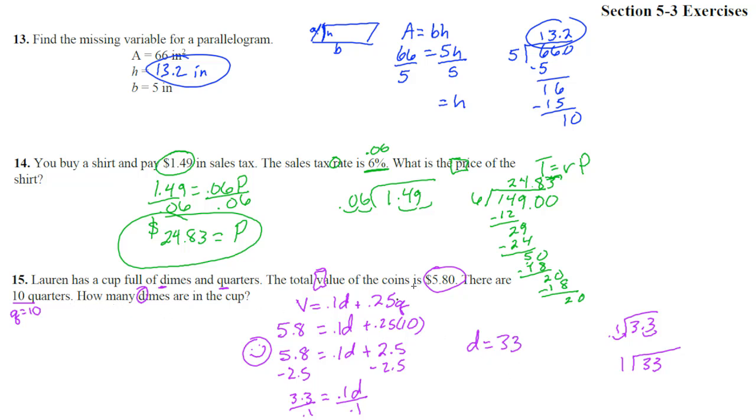Now notice, if you didn't write a formula, you would have done the exact same thing. You're like, oh, I got $5.80. There are 10 quarters. 10 quarters is $2.50. Subtract from $5.80, and you get $3.30. You're like, oh, how many dimes make $3.30? 33. So that's exactly what we did. Subtracted 2.5, and then divided by 0.1.